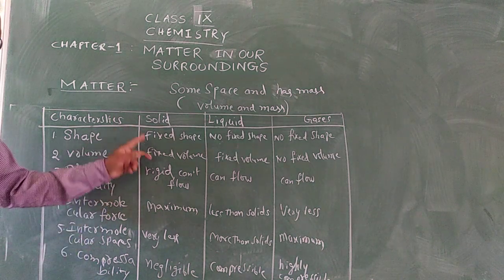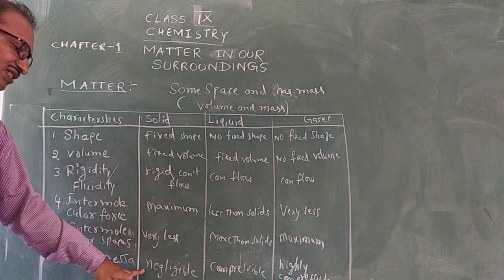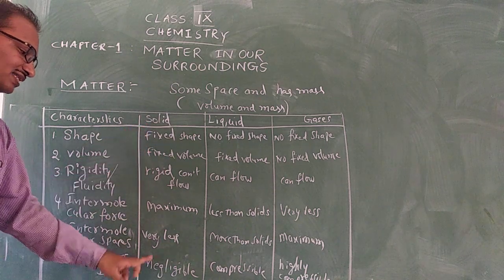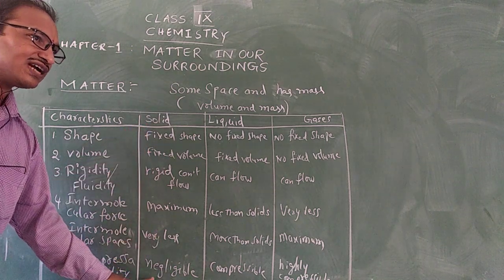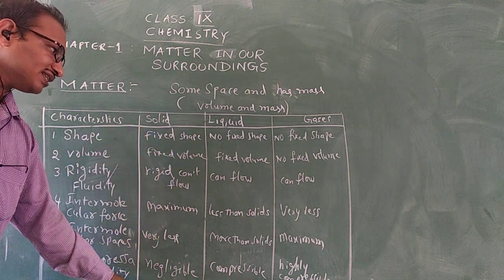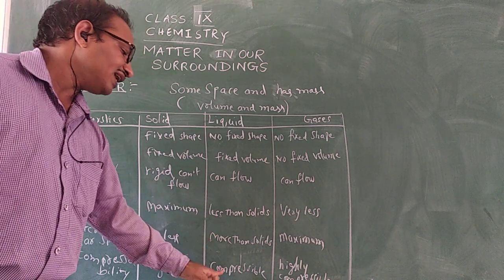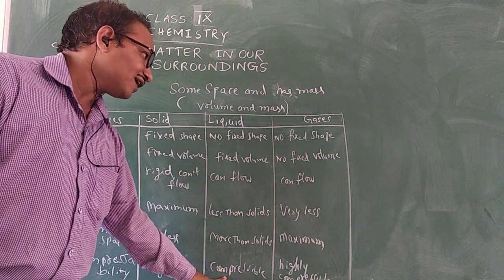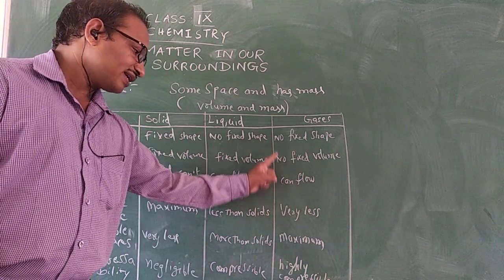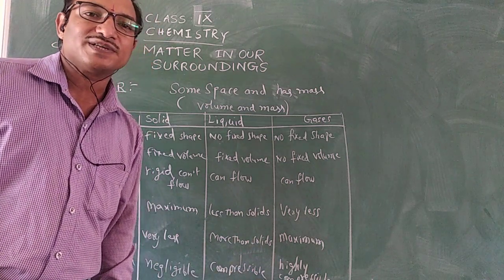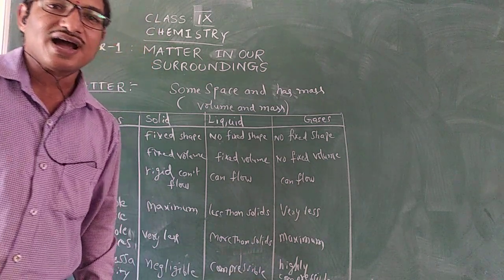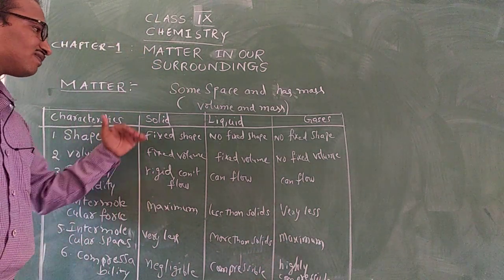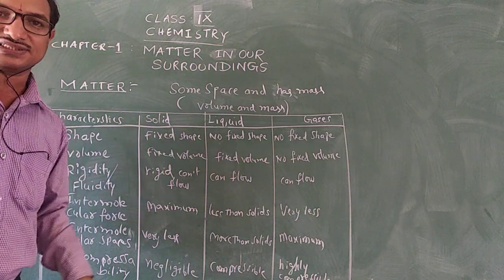Compressibility: solids cannot be compressed — compressibility of solids is negligible. Liquids are little compressible. But gases are highly compressible. These are the basic differences between solids, liquids, and gases.